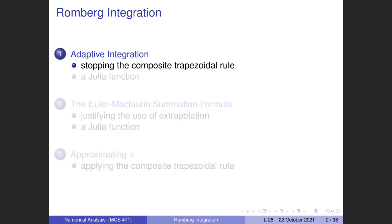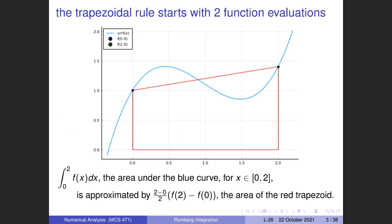Let's start with the composite trapezoidal rule again. Here is the trapezoidal rule which approximates the area under the blue curve by the red trapezoid — that's why it's called the trapezoidal rule. We need two function evaluations at the endpoints of the interval. Sometimes we underestimate and sometimes we overestimate, so it's an averaging of the function evaluations. If you take sufficiently many function evaluations, you may expect to converge to the integral. There is a statistical interpretation of this.